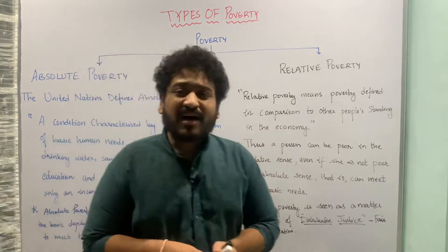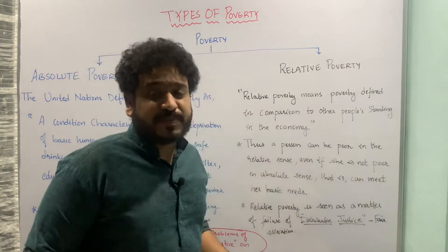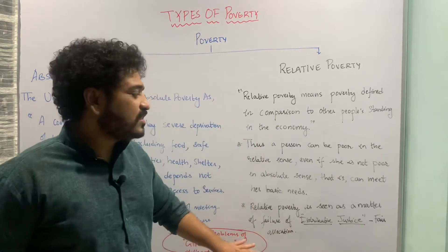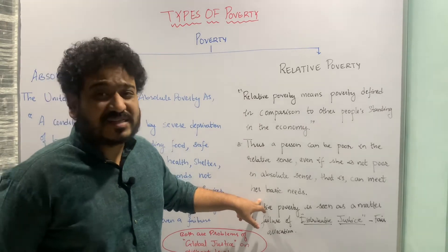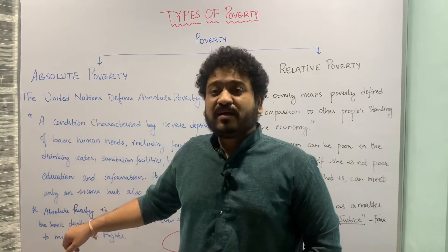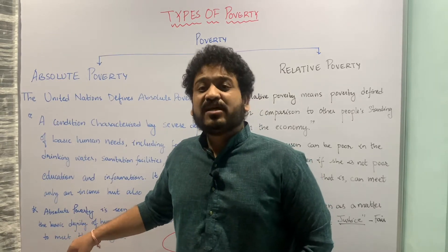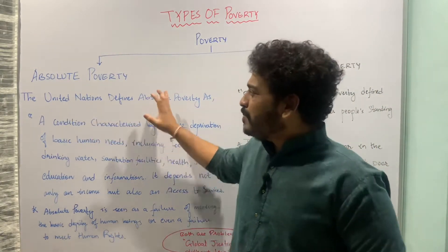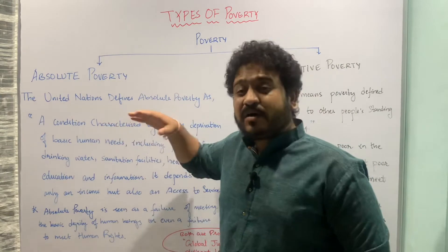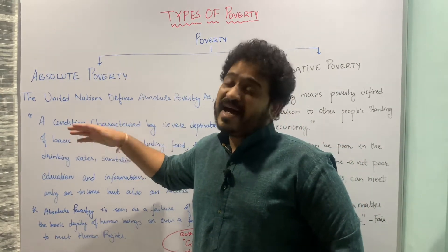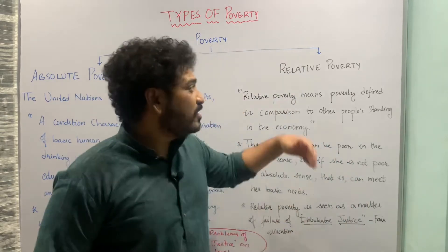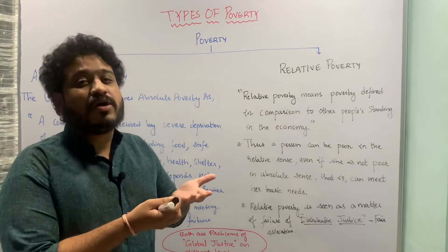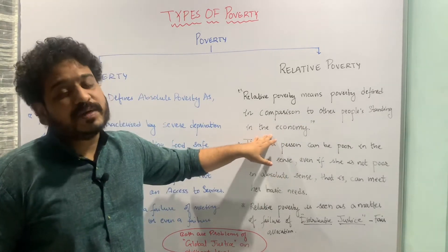Both absolute poverty and relative poverty are denying justice — this is something called global justice. Absolute poverty denies human justice or basic human rights, while relative poverty denies distributive justice. So these are both subject matters of global justice at different levels. Absolute poverty refers to deprivation in access to services and income, while relative poverty is poverty in comparison to an individual's standing in a particular economy.